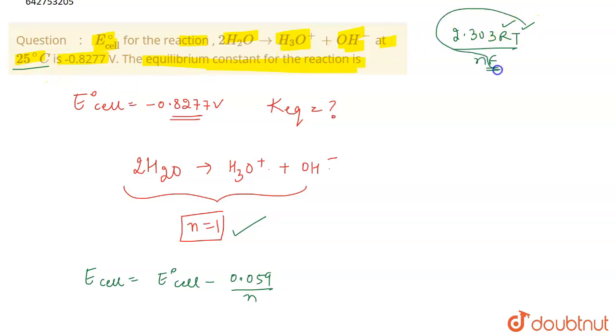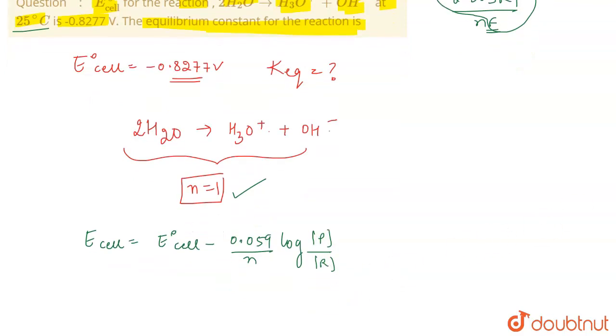Log of concentration of the products divided by the concentration of the reactants - this is what the Nernst equation is. Now whenever we have to calculate the equilibrium constant, what really happens is...